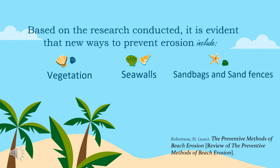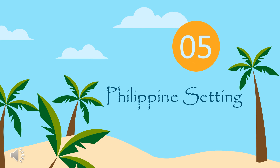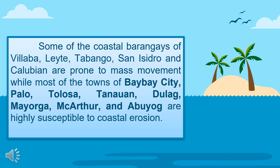Some coastal barangays of Bilabalete, Tabango, San Isidro, and Calubian are prone to mass movement. Meanwhile, most towns of Baybay City, Palo, Tolosa, Tanauan, Dulag, Mayorga, MacArthur, and Abuyog are highly susceptible to coastal erosion.